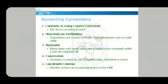The next convention is materiality. Minor items with small values are assumed to be consumed within a year and are expensed off. For example, if a firm orders two reams of paper or two boxes of pens, those are very small amounts compared to the firm's operations, so we don't keep an account of them. Such minor items won't last more than a year anyway.